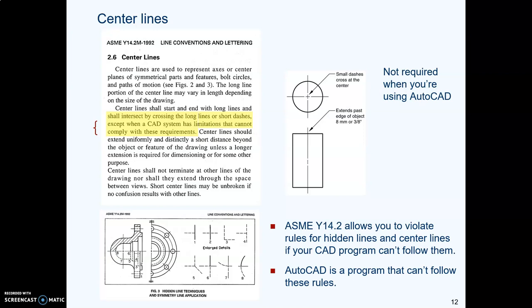The ASME standard says you should have little plus signs at the center of a circle, unless your CAD system can't do that. AutoCAD can't necessarily do that unless you're using the center mark command. So we are not required to put plus signs lined up in the middle of our circles. If you ever encountered drafting in the old days of board drafting with pencil and paper, we had to practice putting those little short dashes in the middle. But we don't have to do that anymore.